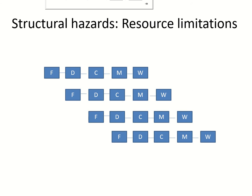Though pipeline allows concurrent execution of instructions, sometimes limited resources might cause structural hazards which may stall the pipeline. This happens when two instructions which are running concurrently might want to access the same resource at the same time.